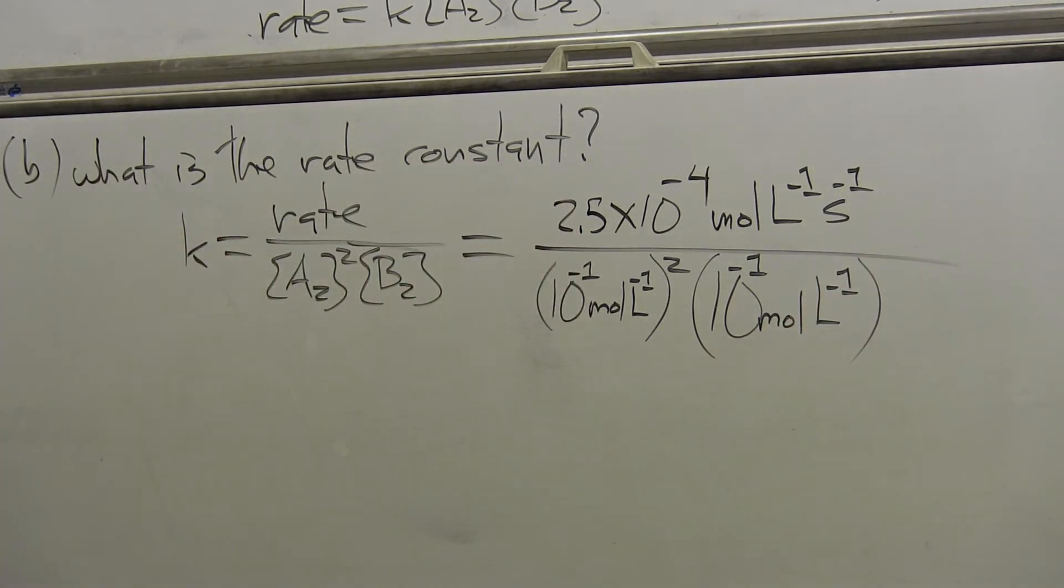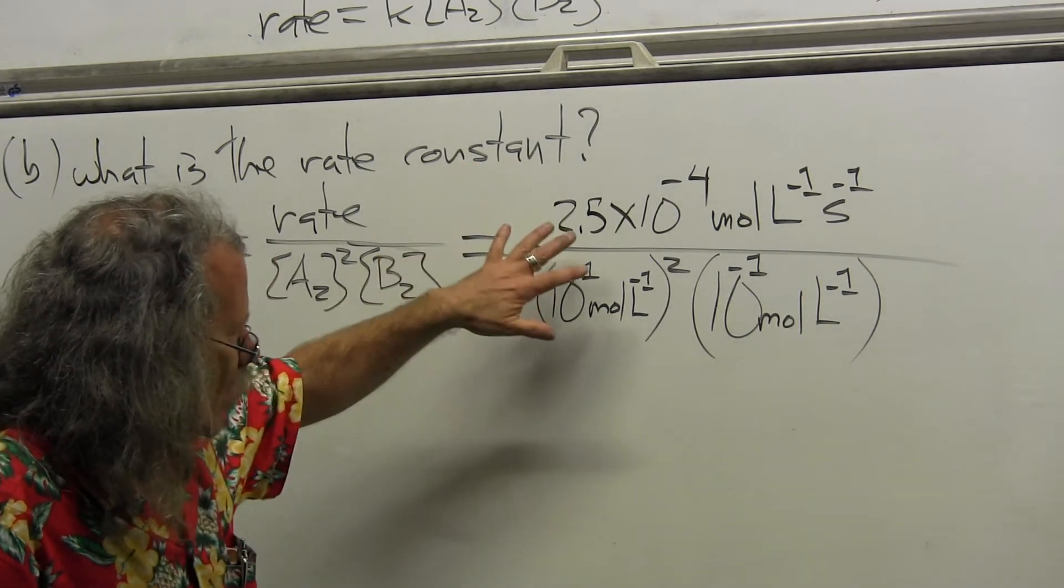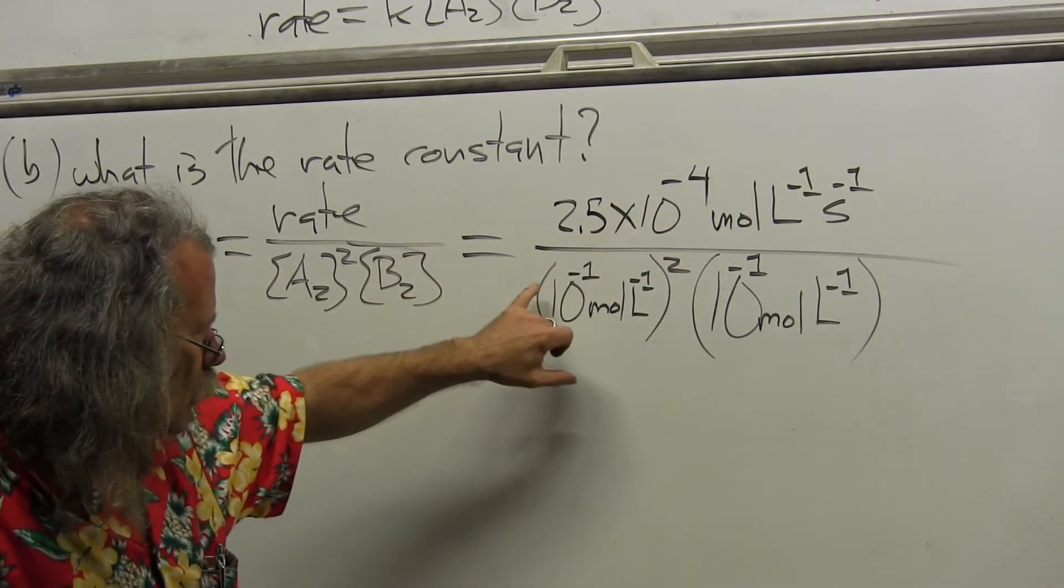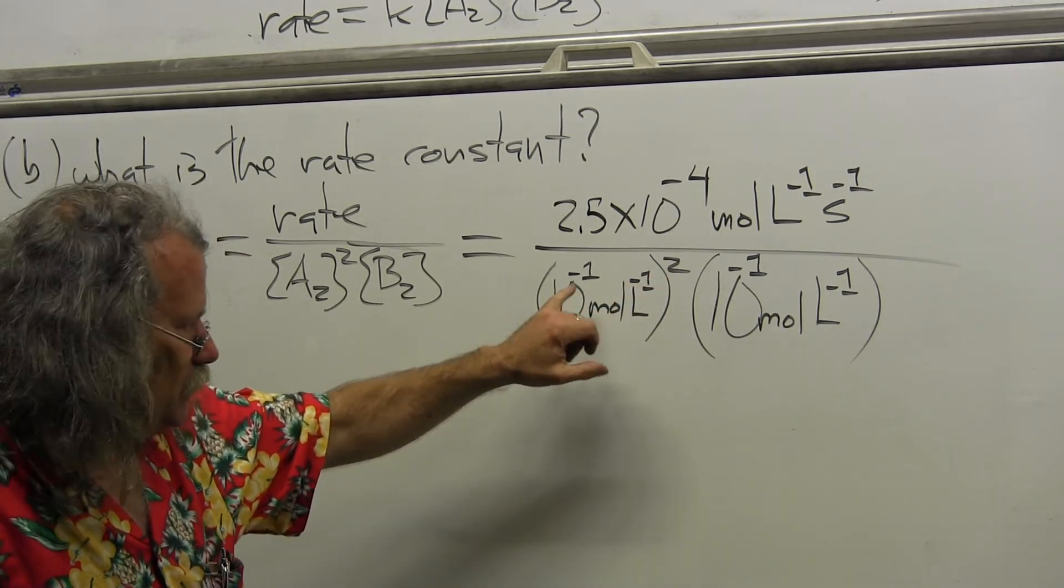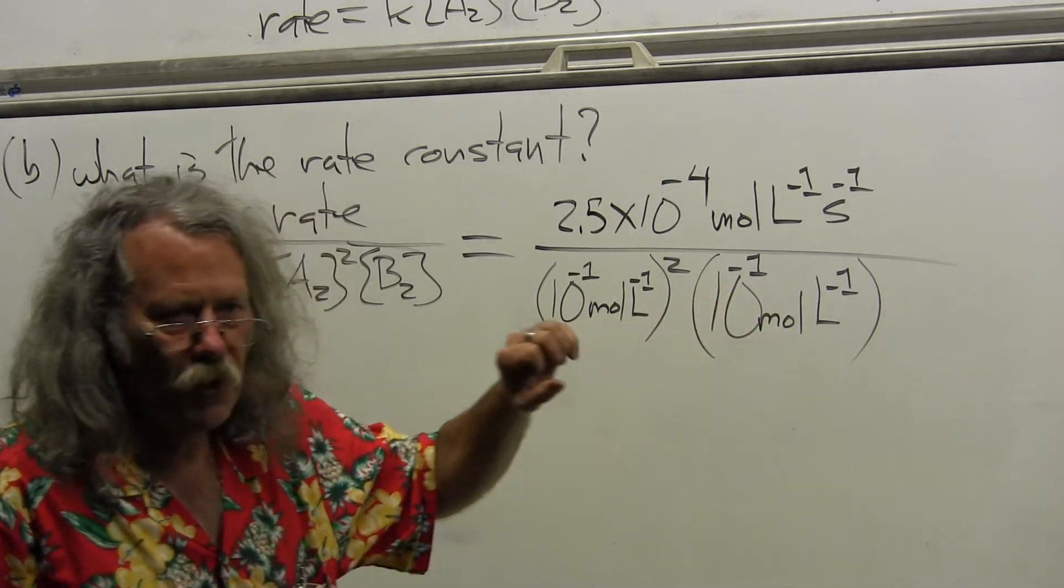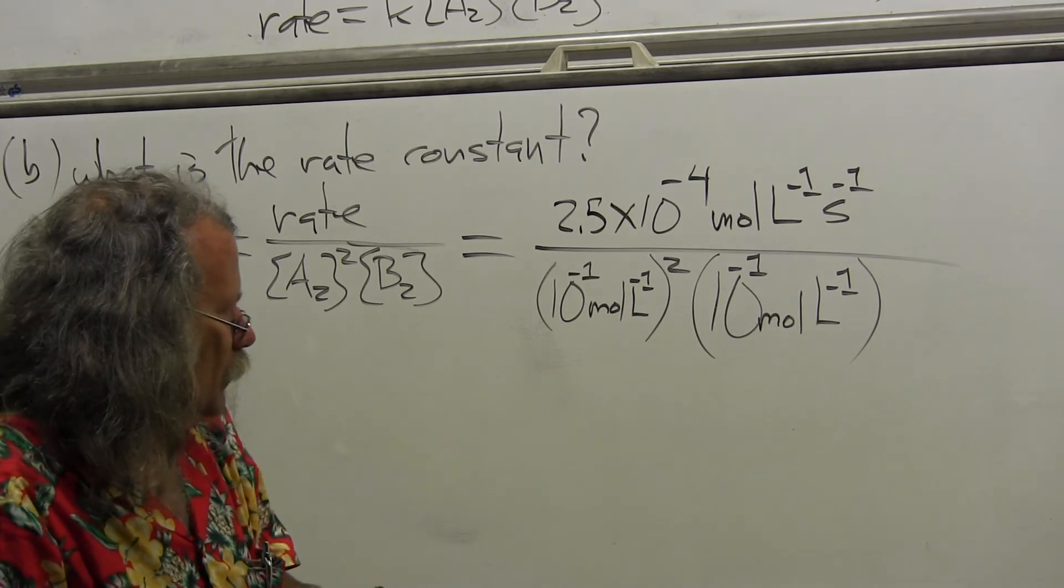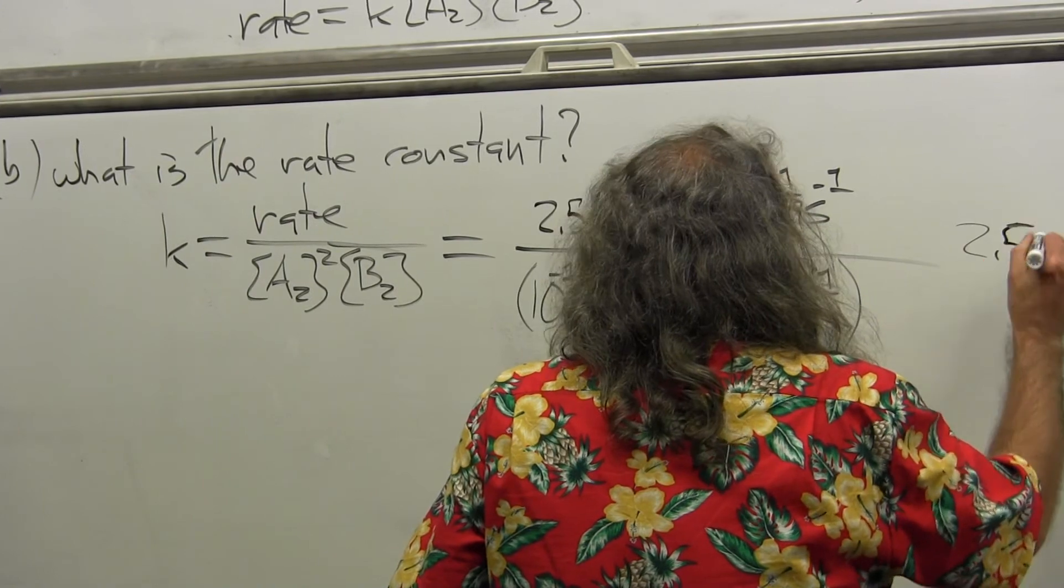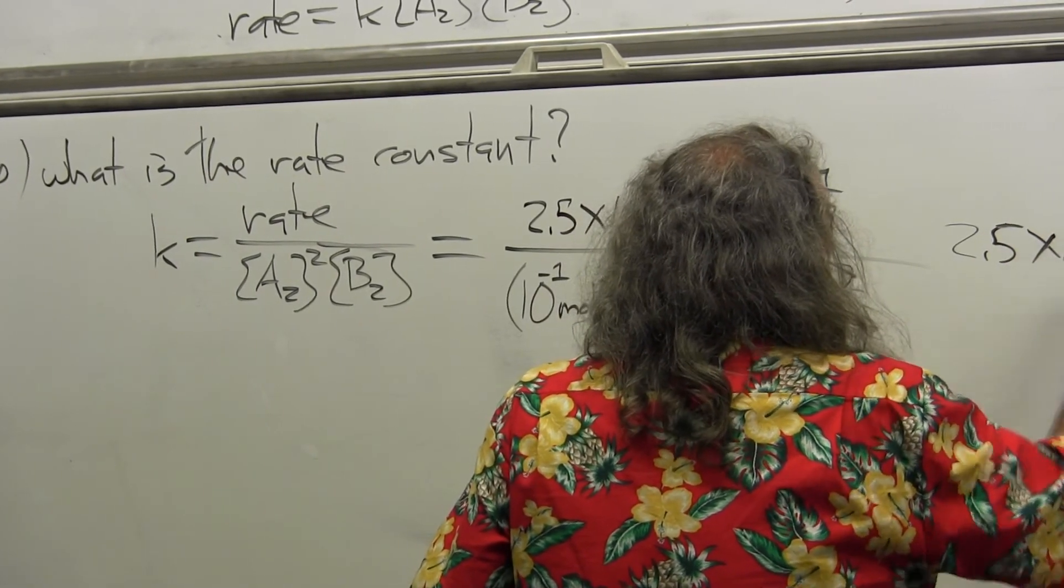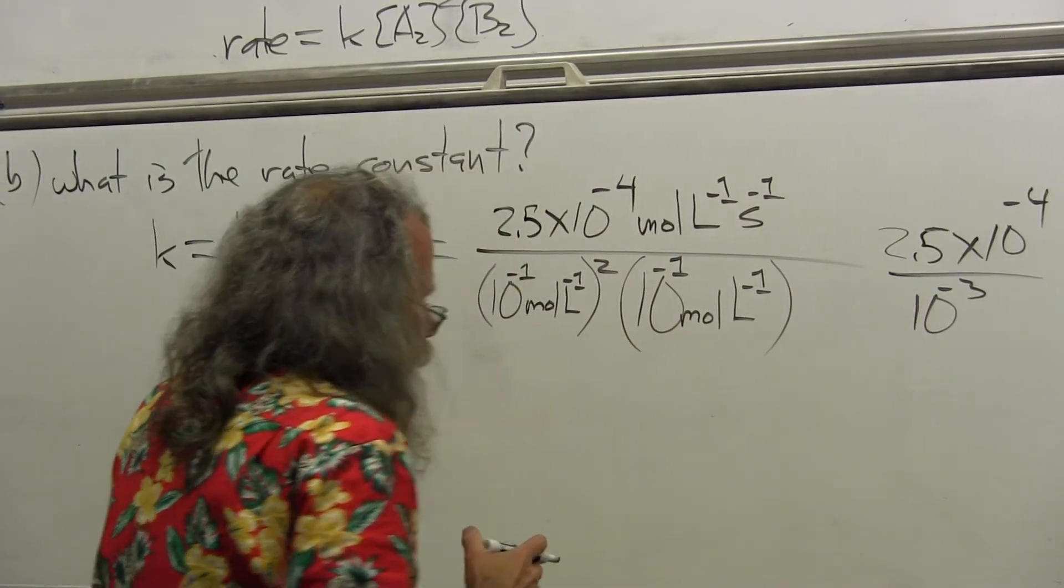If you include all the units, you're going to be fine. Now let's just do the math. We'll leave the top alone for now. 10 to the minus 1 squared is what? 10 to the minus 2. 10 to the minus 2 times 10 to the minus 1 is 10 to the minus 3. So I'm going to end up with ultimately something that's going to be 2.5 times 10 to the minus 4 over 10 to the minus 3.